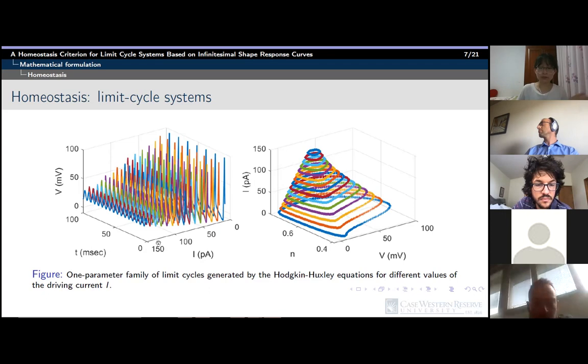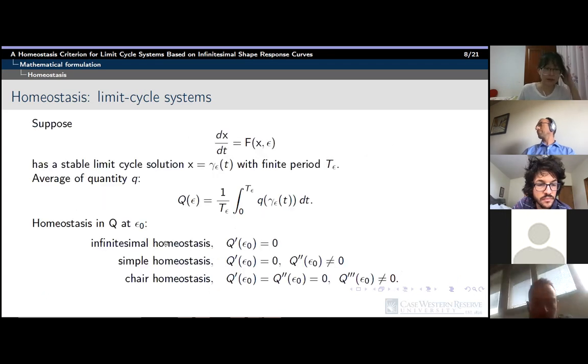So to solve this problem, we apply the infinitesimal shape response curve. But let's first look at some notations. This is a general system which has a stable limit cycle solution for each epsilon with finite period T sub epsilon. The quantity of interest is denoted by lowercase q and the capital Q is the average of lowercase q evaluated around the limit cycle solution for one period. Then define homeostasis criteria for the capital Q in terms of its derivative with respect to the control parameter. This is analogous to the formulation by Golubitsky and Stewart for fixed-point systems. Then our goal is to provide a formula for analytically calculating the derivative of Q with respect to the control parameter so that we can use the formula to identify homeostasis points.